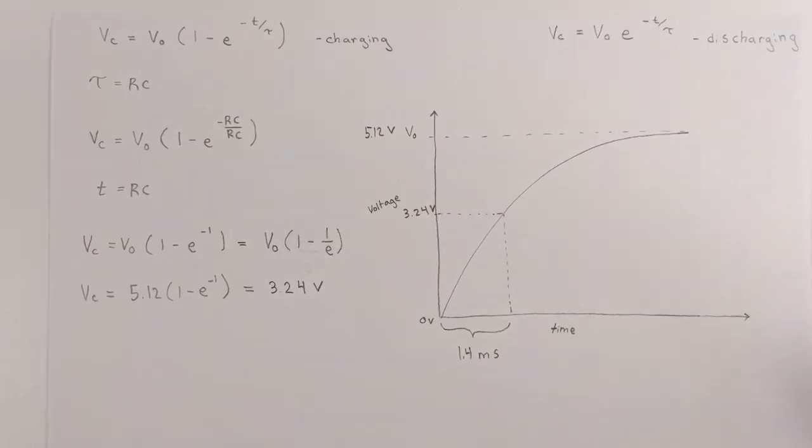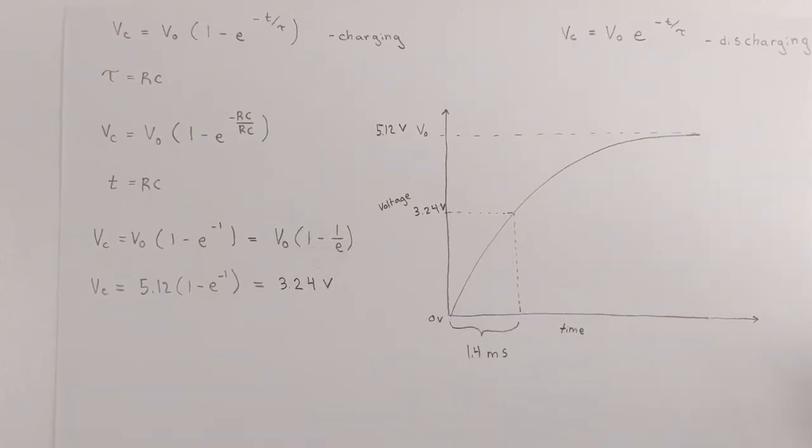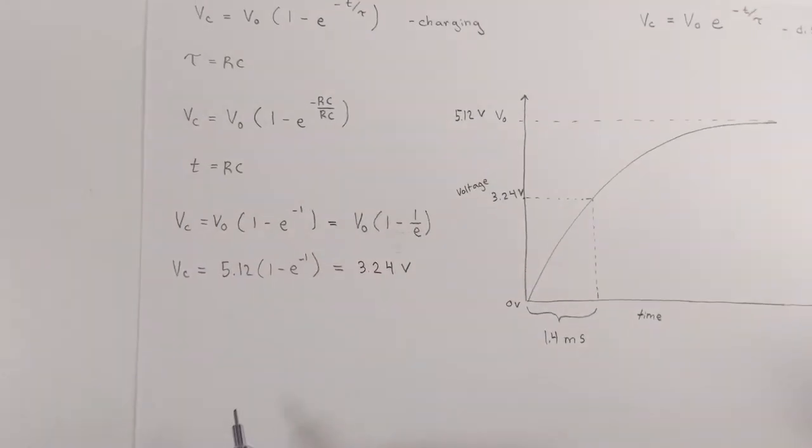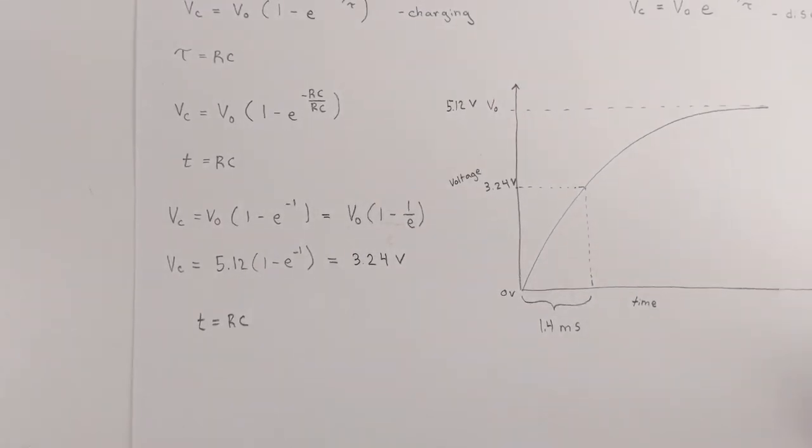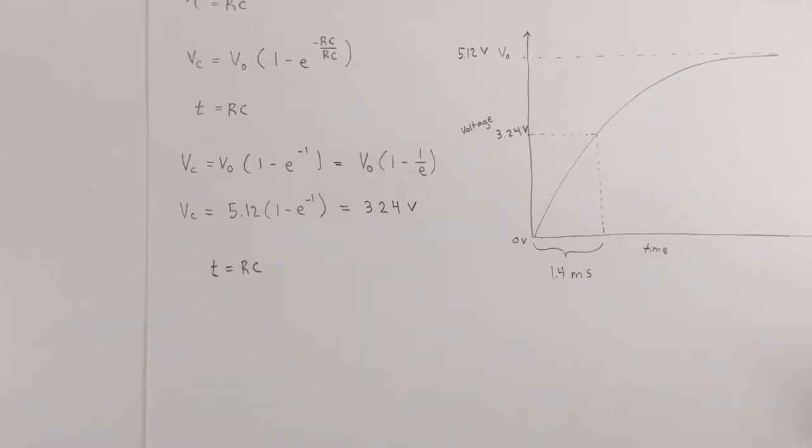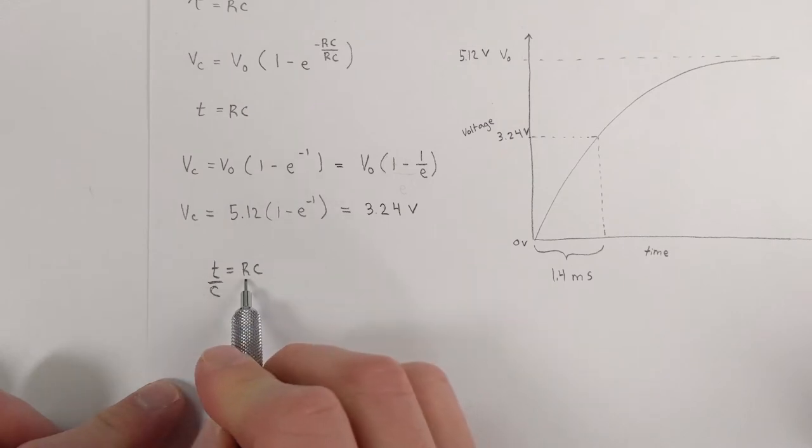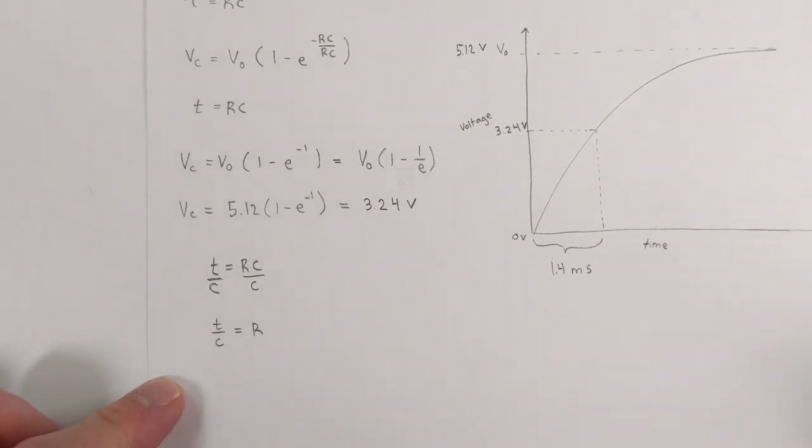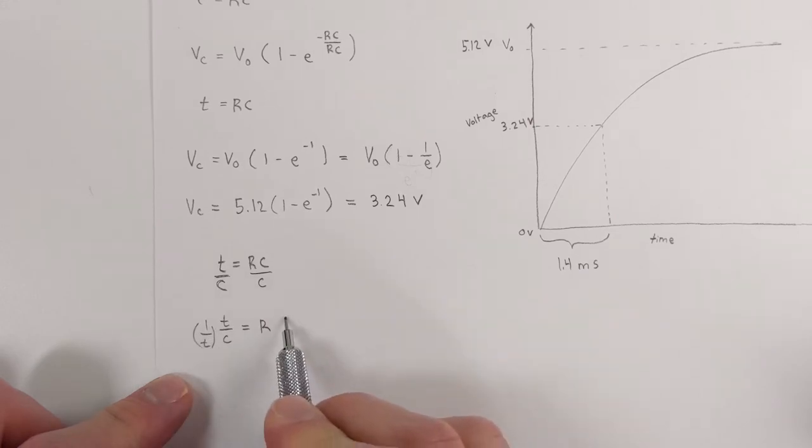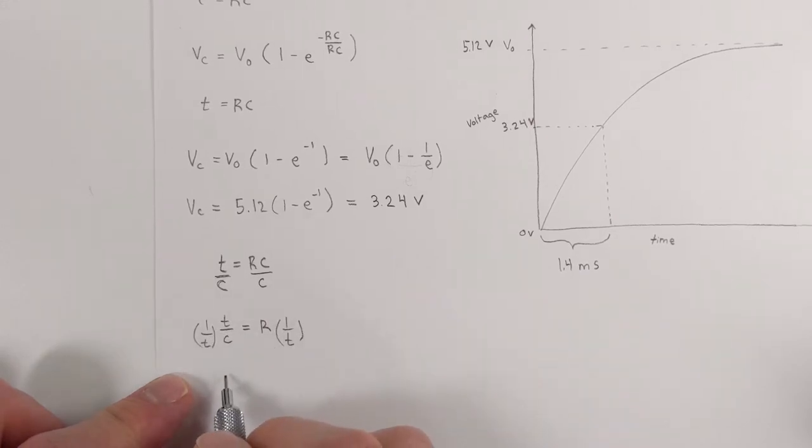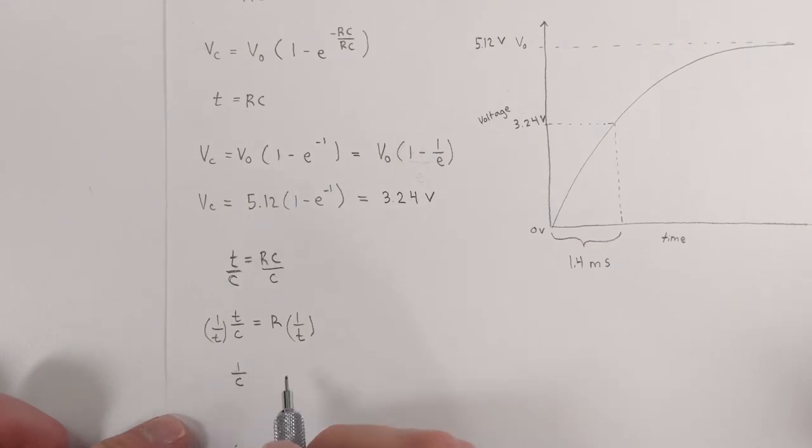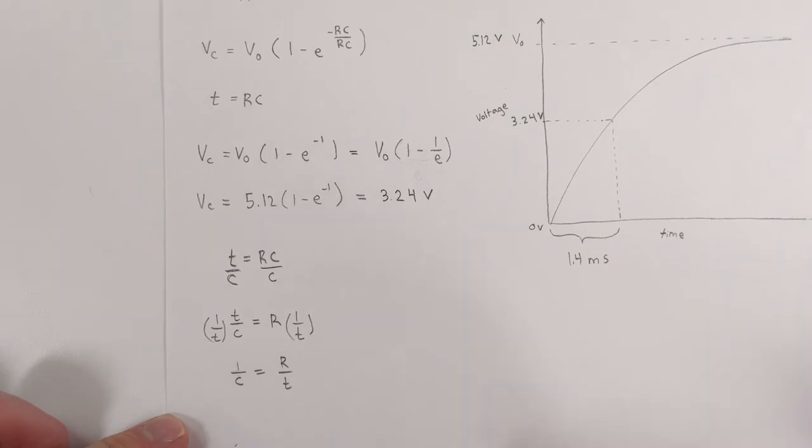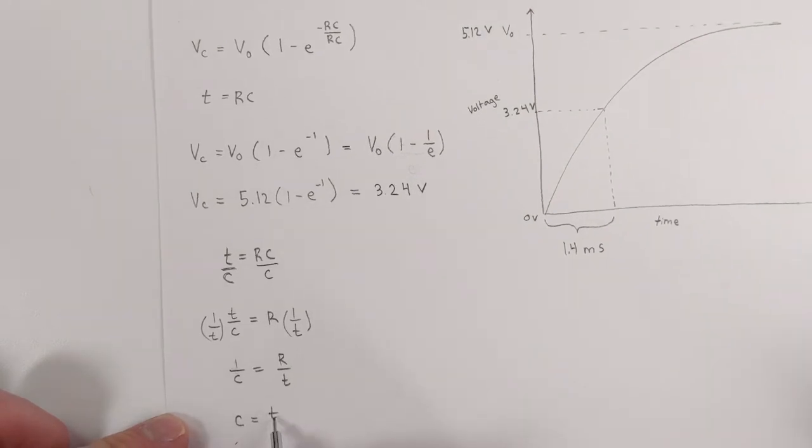Alright, so it takes the capacitor 1.4 milliseconds to charge to 3.24 volts. And so now what we can do is, since we set T equal to RC, we can figure out the capacitance. So how we do this is we're going to rearrange this so we get C on one side. So we divide by C, we get T over C is equal to R. Now we multiply by the reciprocal, we get 1 over C is equal to R over T. Now we take the reciprocal, C is equal to T over R.